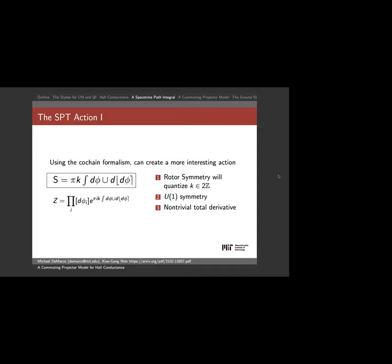This model has three critically important properties that are the rules of the road for the rest of the talk. First, rotor symmetry forces k to be quantized — specifically an even integer because this is a bosonic model (it can be extended to fermionic with spin structures). Second, it has U(1) symmetry. Third, it is a total derivative — which connects to why it gives an SPT state and a commuting projector model.